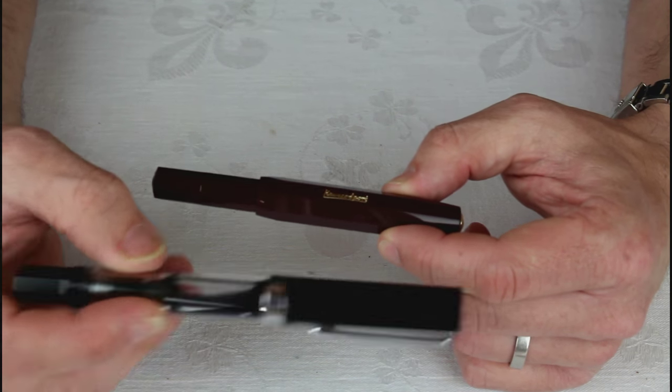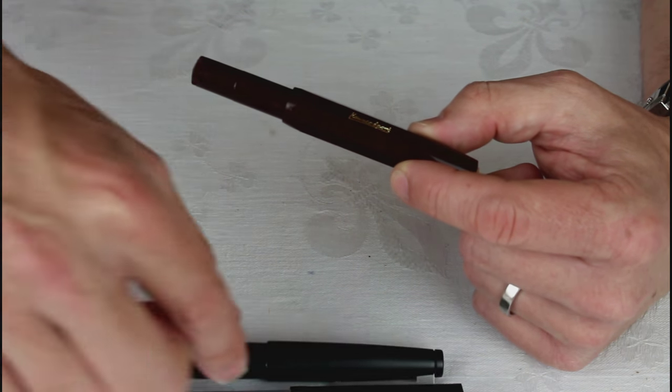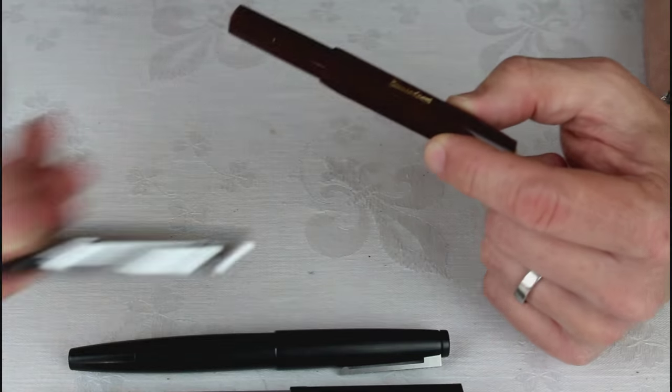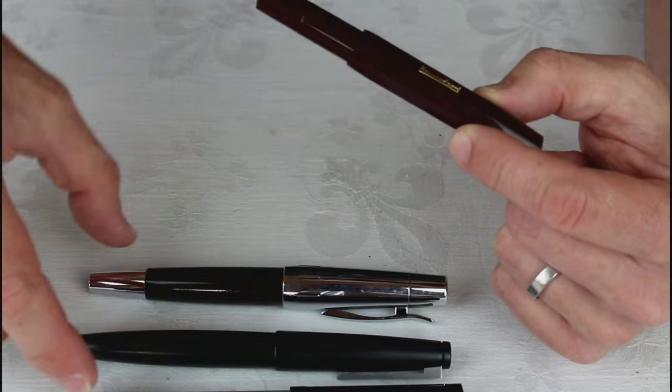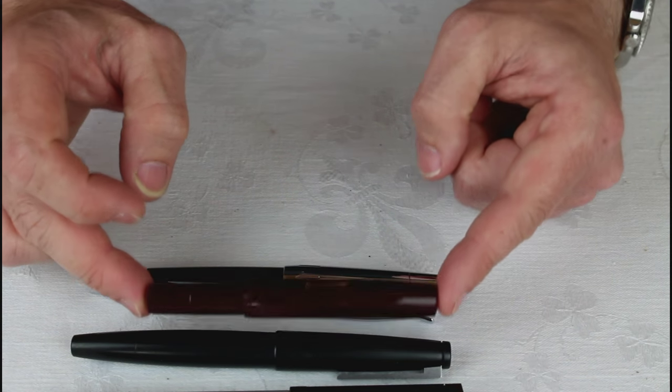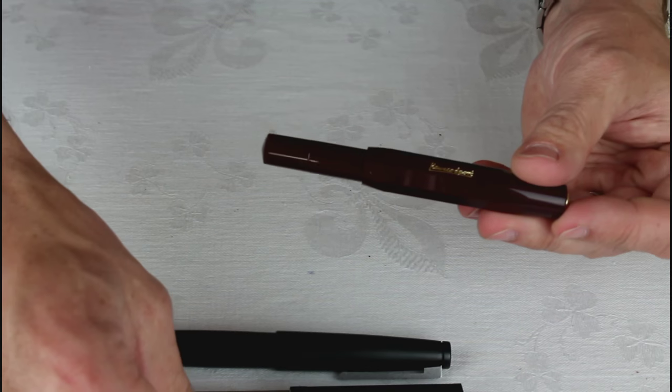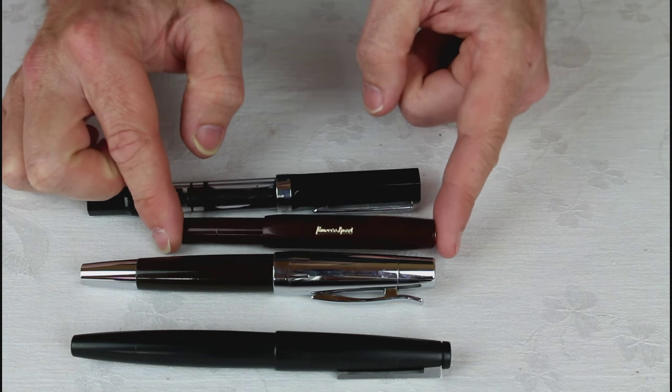Things like the Twsbi, the Lamy 2000, or the Faber-Castell Emotion, all great pens, couple of great steel nibs in there as well, but nothing as compact as the Kaweco. Really nicely sized.